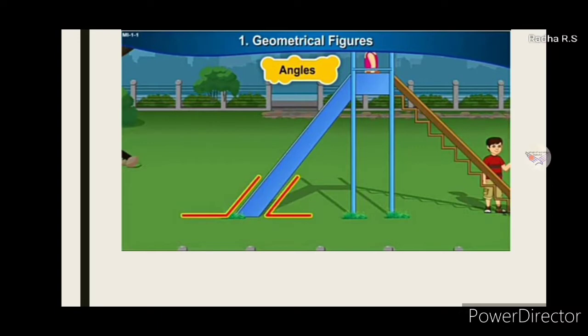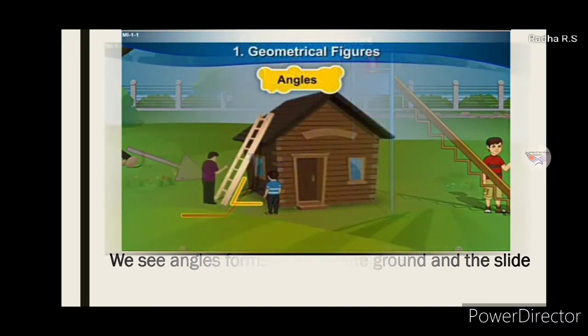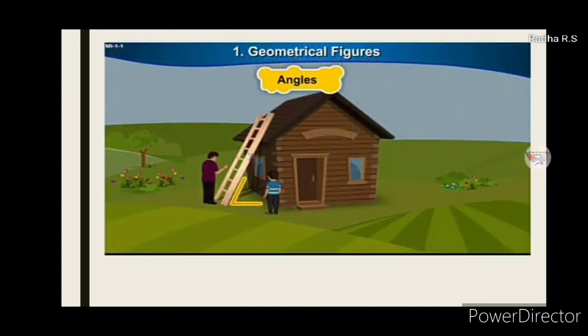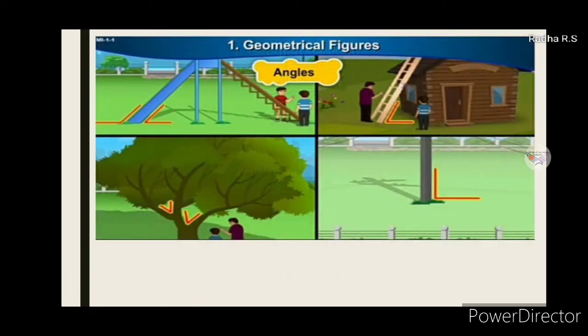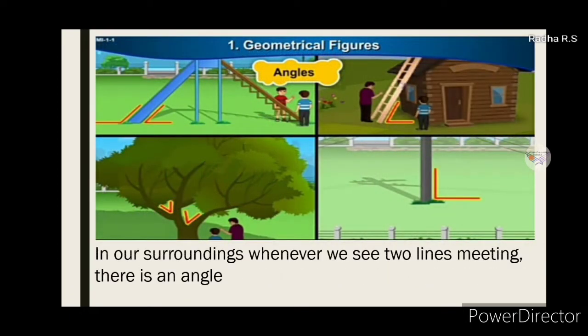What we see in this picture? We see angles between the ground and the slide. Here, do you know this? In this picture, the lighter makes an angle with the ground. In our surrounding, whenever we see two lines meeting, there is an angle.